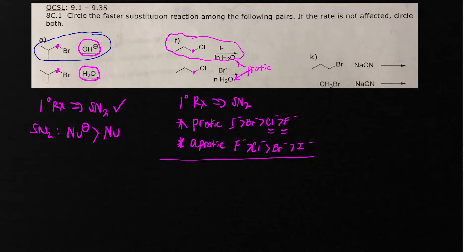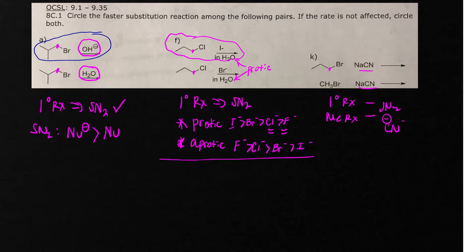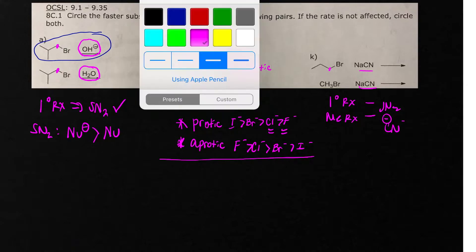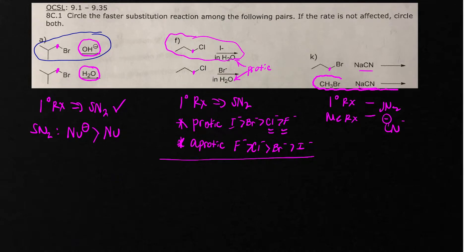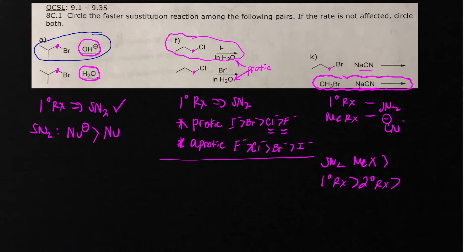In letter K, we've got a primary alkyl halide and a methyl alkyl halide. Both of these are SN2, and the nucleophile is cyanide, which is a negatively charged nucleophile, so it's going to be a great reaction. But you want to look at sterics. For the SN2 reaction: methyl halide is faster than primary alkyl halide, which is faster than secondary alkyl halide. Tertiary alkyl halides don't react by SN2.